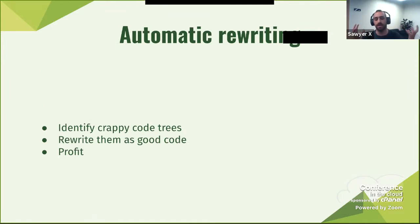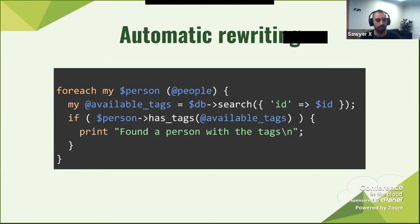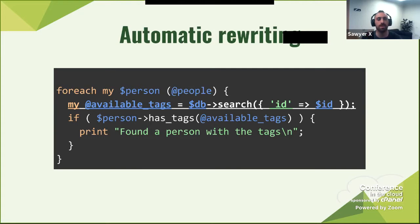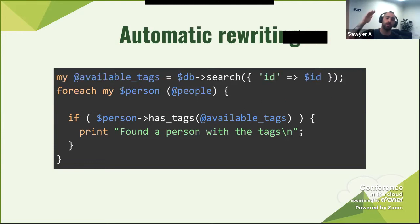Automatic rewriting: it's simple. You identify crappy code trees and you rewrite them as good code — that equals profit because it might be faster. Here's an example I've actually seen at work in more than one company: we do a 'for each', then we get tags from the database, checking if a person has these tags, and if so, we do something. That specific line for the DB search is not using the person we're iterating on — we just use an ID — which means it will run every time. If that search is heavy, we're running a ton of queries. What we actually want is to pull it all the way up and then just use that data.